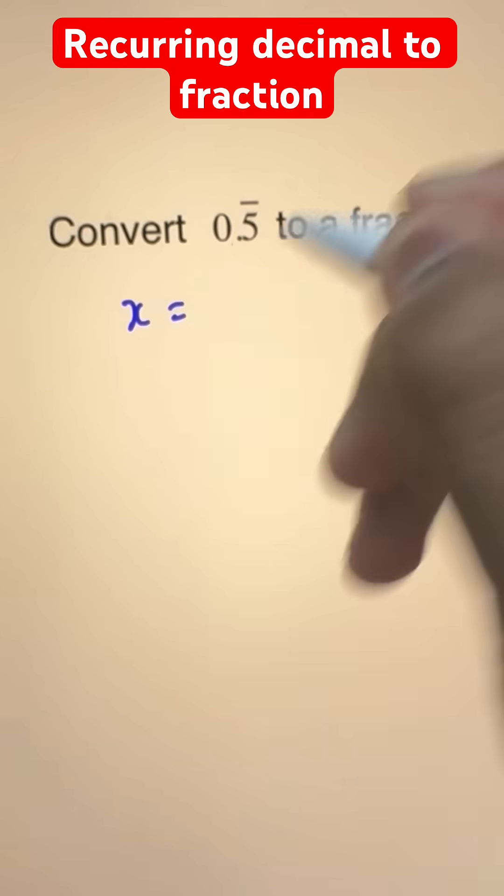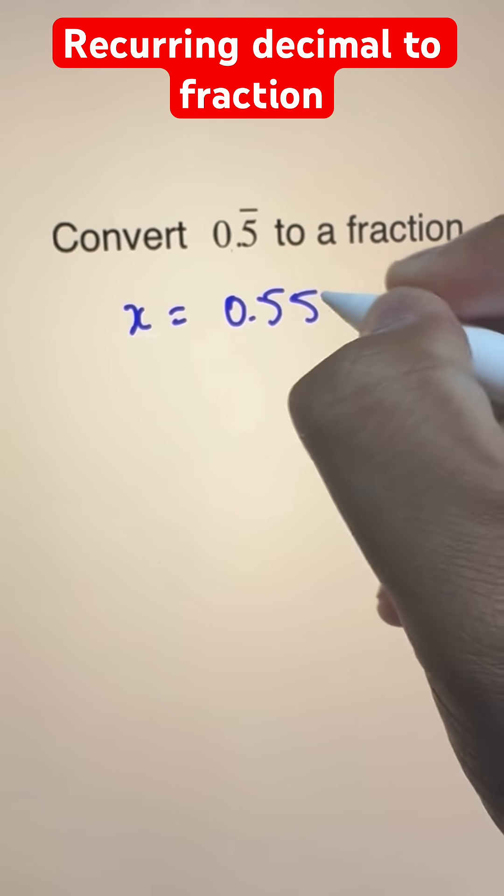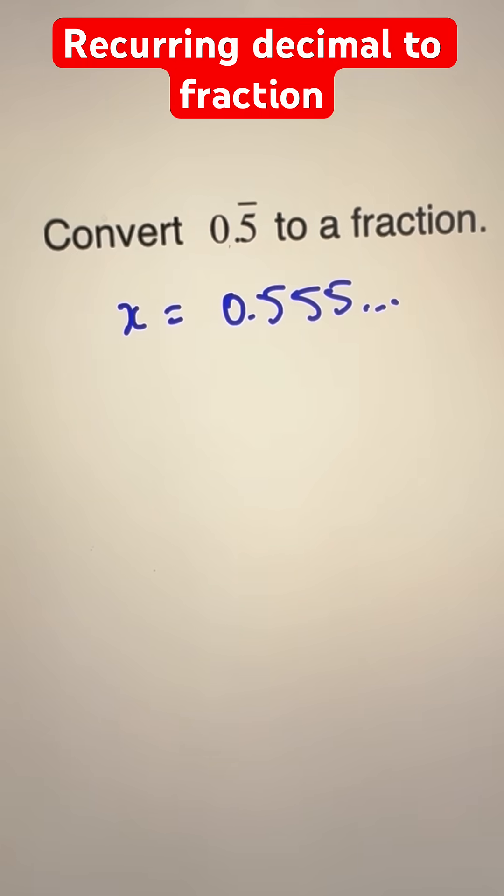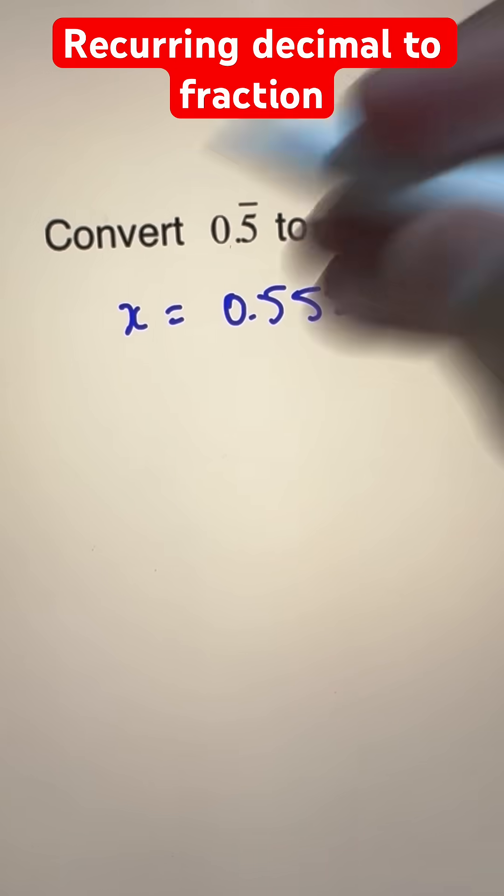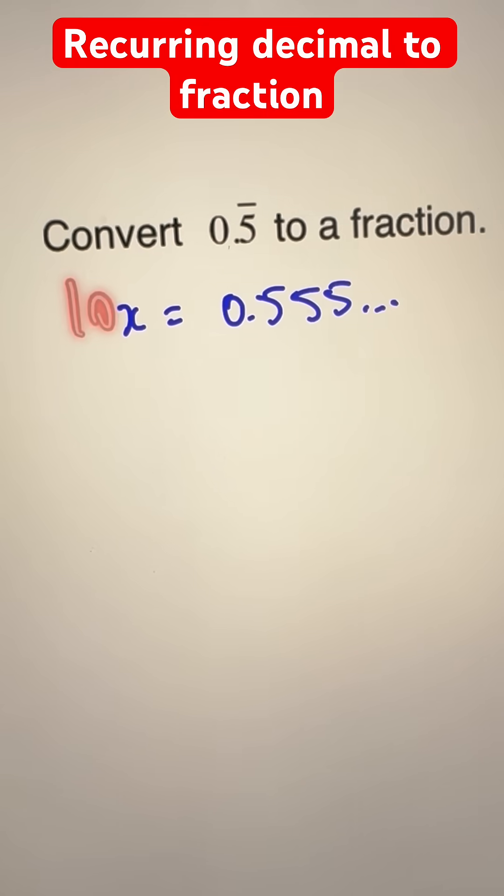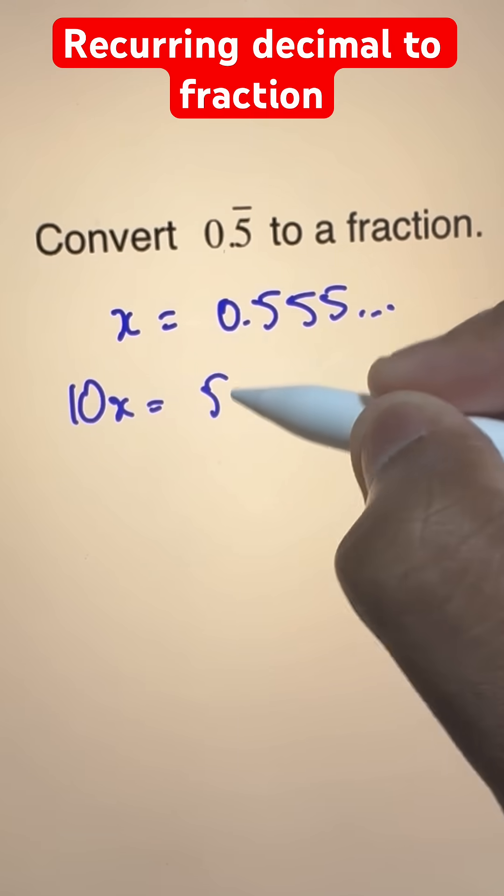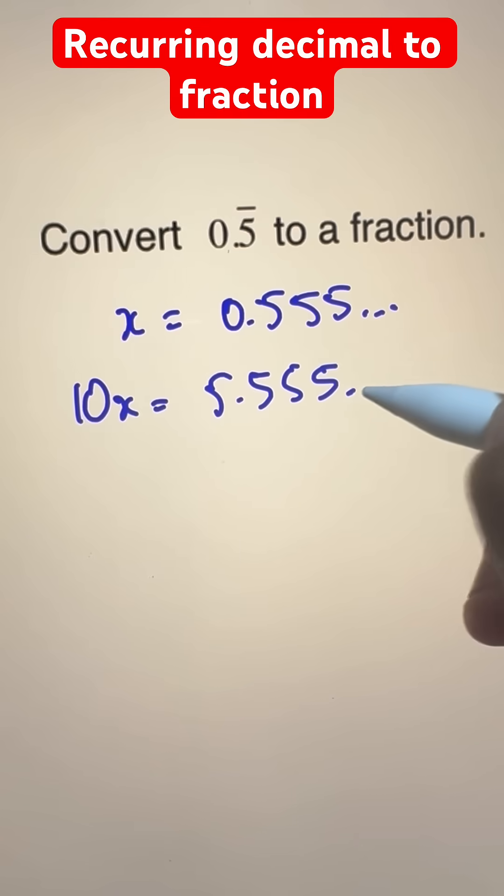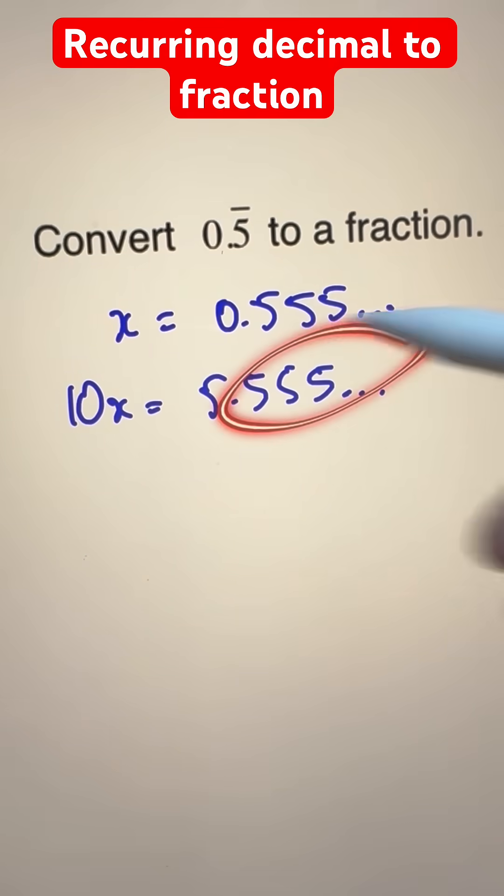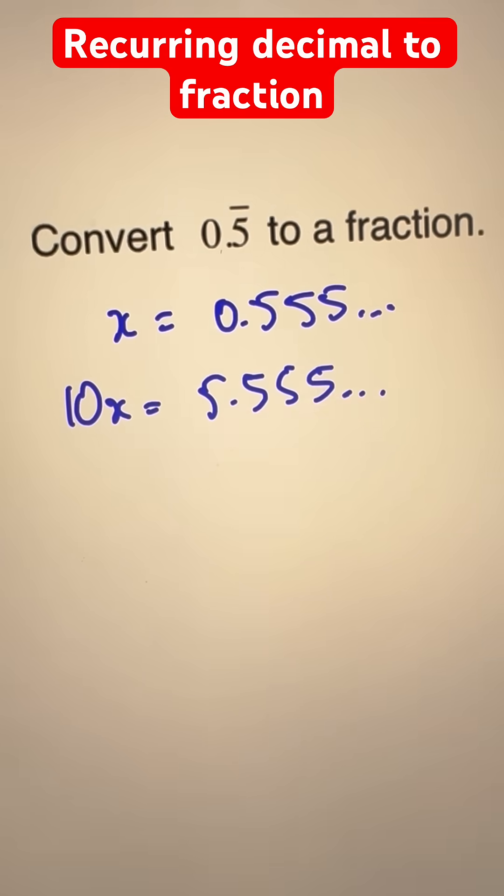Let's name this decimal as x. So we can write that as the recurring decimal like this. And now you can find 10x. So 10x is equal to 5.555 and it goes on. It's infinitely recurring so we still have the same number of 5s.